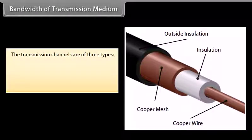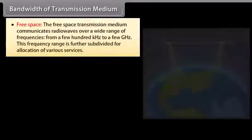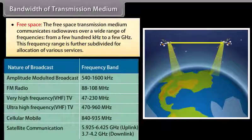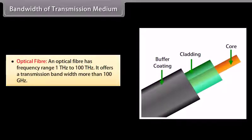The bandwidth of transmission medium: the transmission channels are of three types. Wires — the widely used wire medium is a coaxial cable, with bandwidth of about 750 megahertz, usually operated below 18 gigahertz. Free space — communicates radio waves over a wide range of frequencies, from a few hundred kilohertz to a few gigahertz, further subdivided for allocation of various services. Optical fiber — has a frequency range of 1 terahertz to 100 terahertz, offering a transmission bandwidth of more than 100 gigahertz.